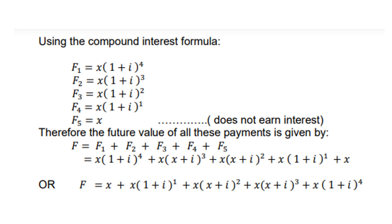Therefore, the future value of all these payments is given by F1 + F2 + F3 + F4 + F5. So if you add them all up, you get x(1 + i)^4 + x(1 + i)^3 + x(1 + i)^2 + x(1 + i)^1 + x. Or we can turn it around and write it in the other order.